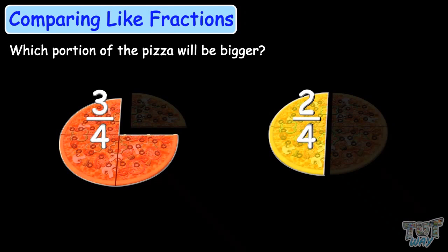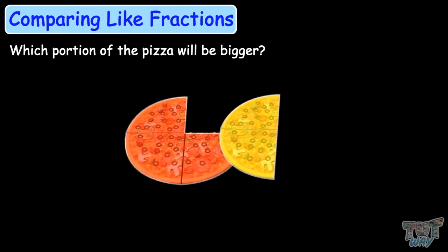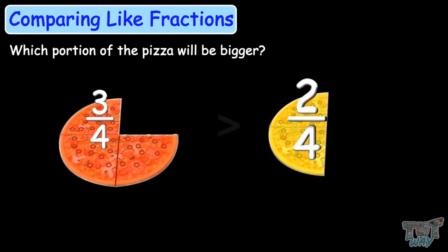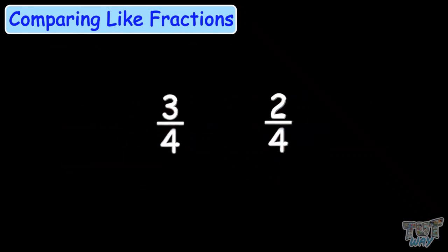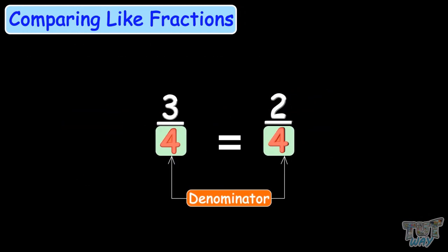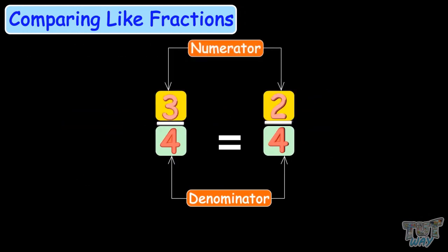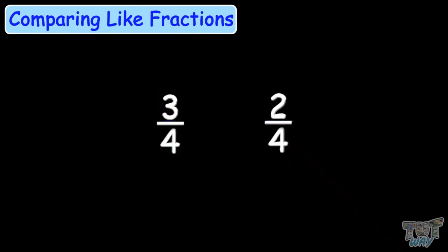You can visually compare that 3 by 4 pizza is bigger than 2 by 4 pizza. From this example, you also learn that if the denominators are the same, you just need to compare the numerators. This is why 2 by 4 is smaller than 3 by 4.